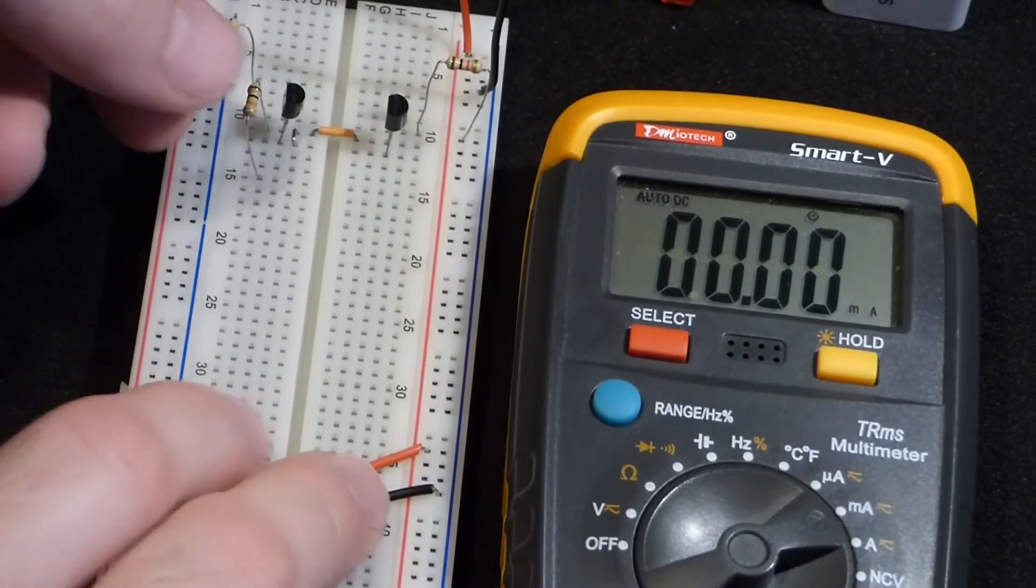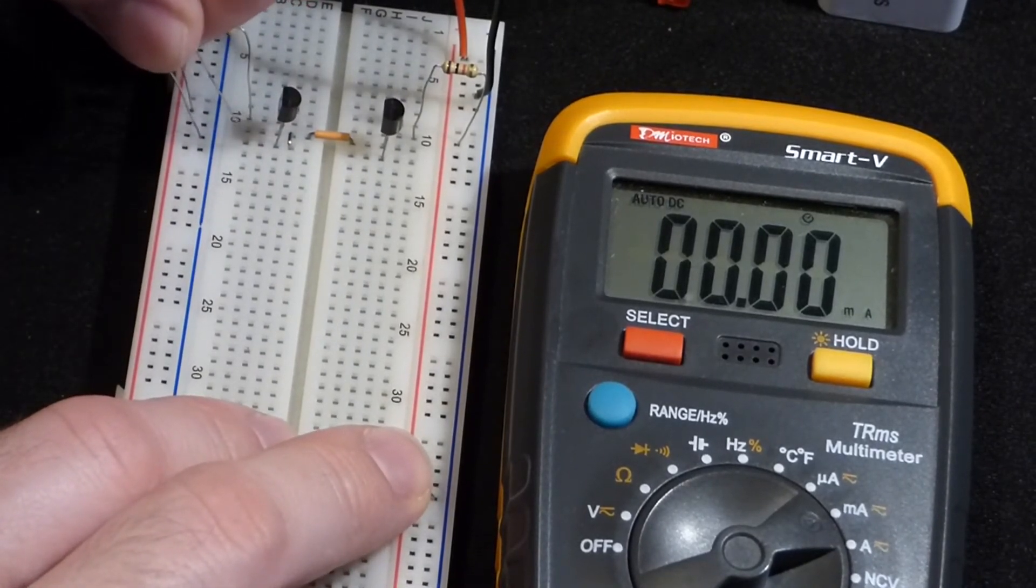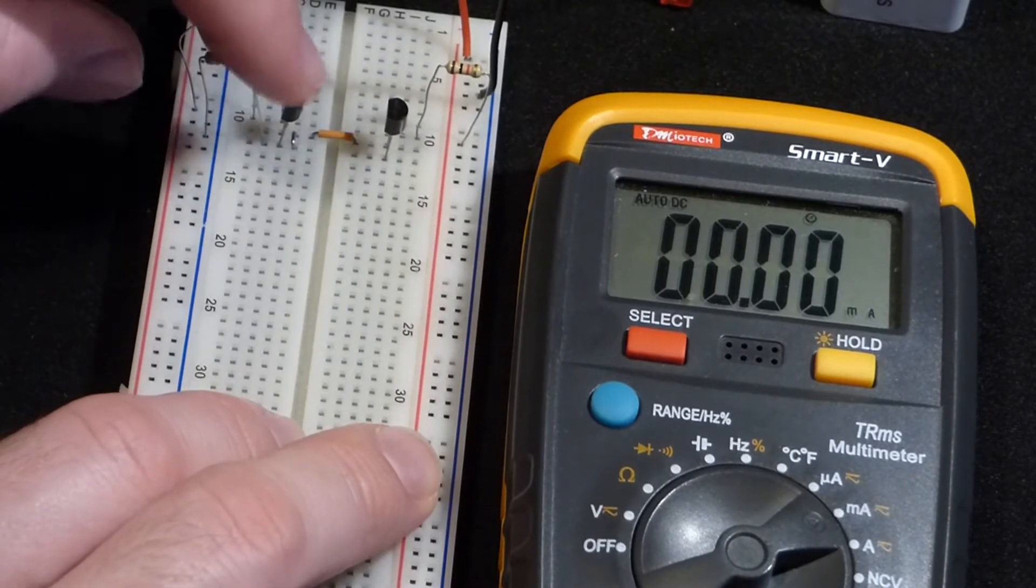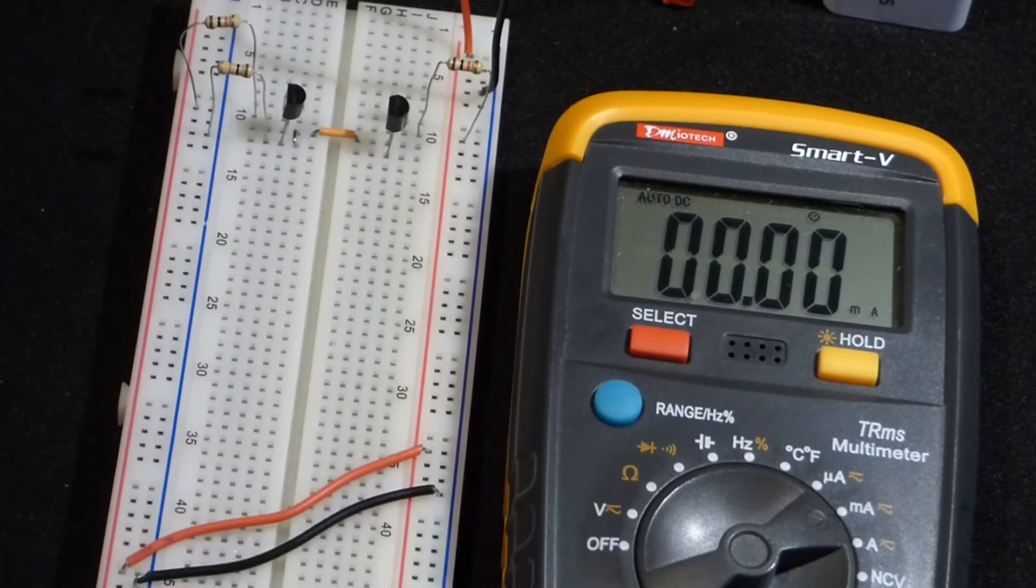So now we're going to take the resistor that we just measured the current from and connect it directly to ground while it's still connected to the collector of that PNP transistor. So the same amount of current is flowing through there, but it's not flowing through the meter.